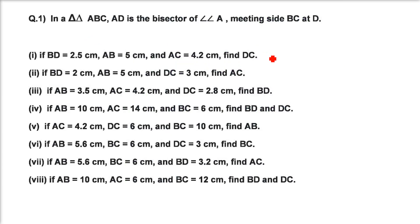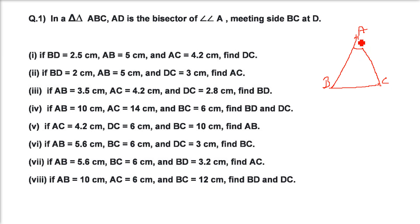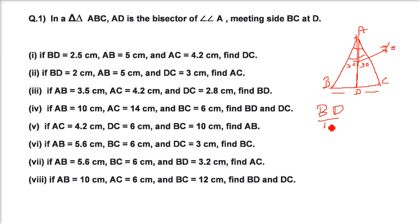The questions in this exercise are based on the angle bisector concept. When we have a triangle with angle A, B, C and sides AB, AC and BC, and we have an angle bisector of angle A — meaning it bisects angle A equally, say 60 degrees into 30 and 30 — then the line on the opposite side divides it proportionally. That is, BD by DC equals AB by AC.